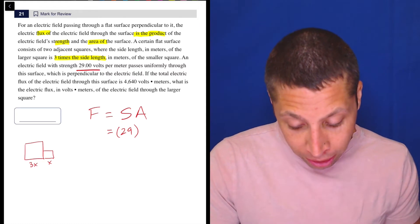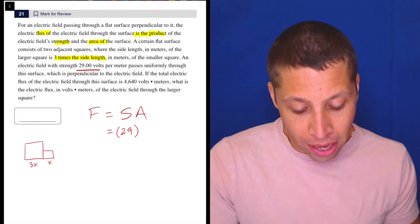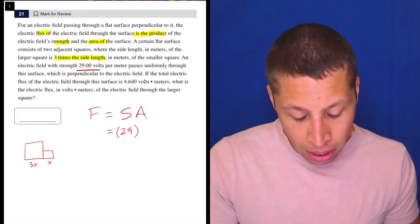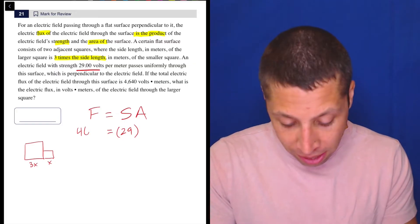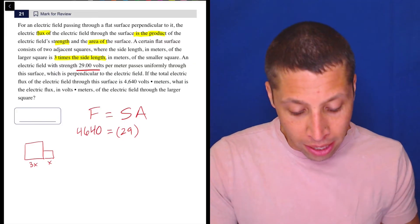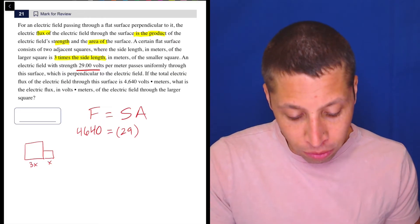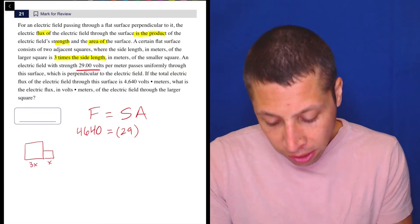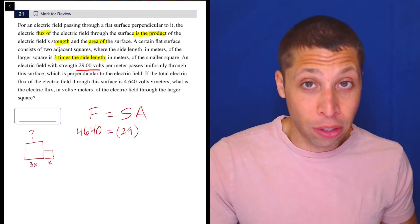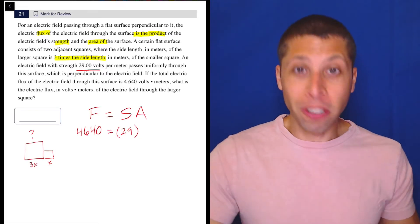If the total electric flux of the electric field through the surface is 4,640 volt meters. So again, this is just 4,640 is the flux. What is the electric flux in volt meters of the electric field through the larger square? So this is mysterious. I don't know what that's all about, but I'm going to trust the process.